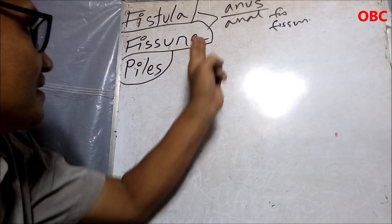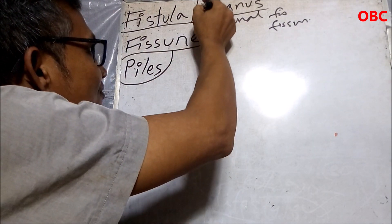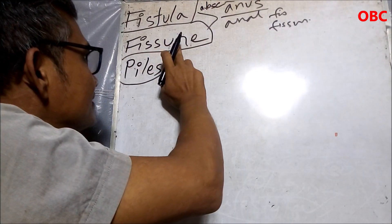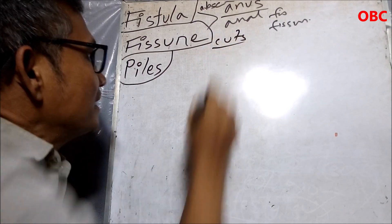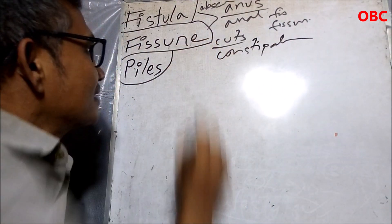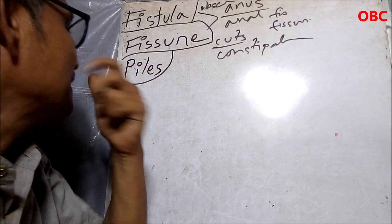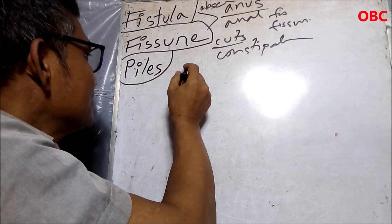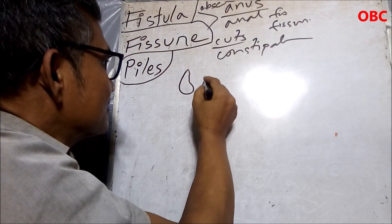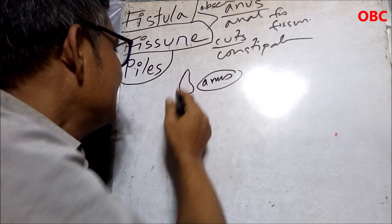So fistula is basically an abscess. Fissure involves micro cuts when you have constipation — it's difficult to pass stool, so there will be a lot of cuts. But piles is different. It is a lump of flesh inside the anus.